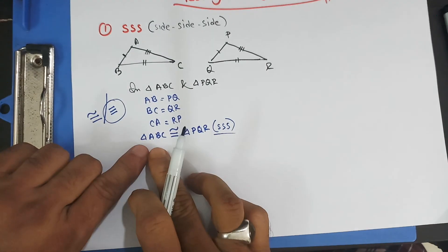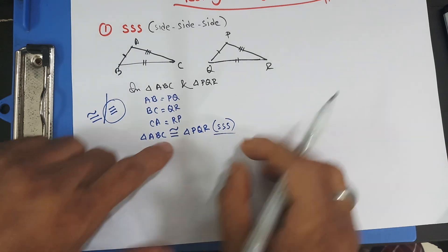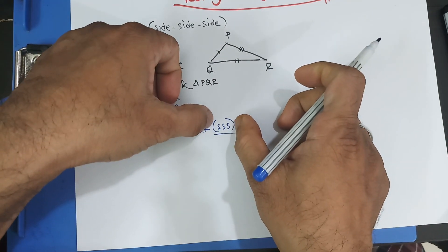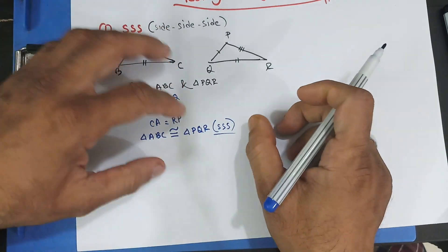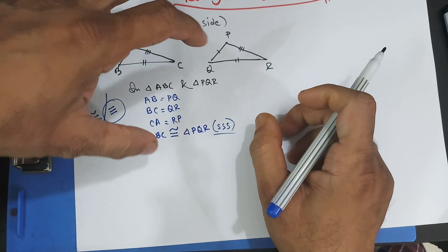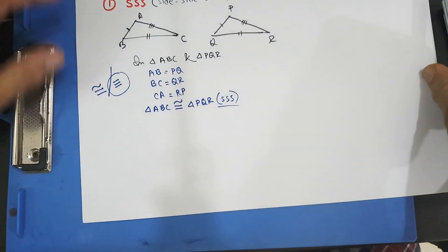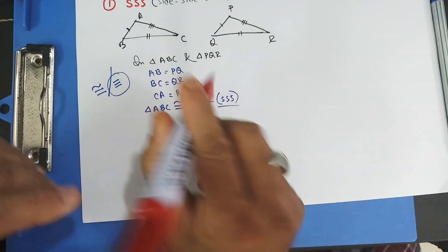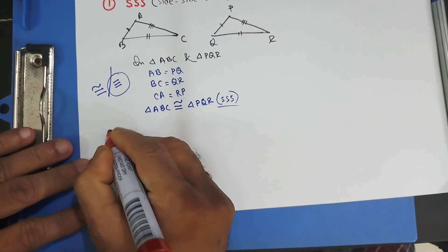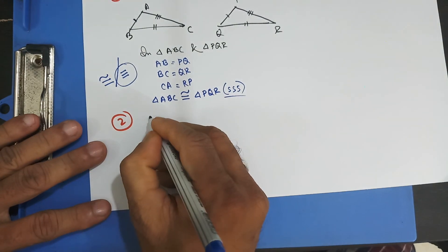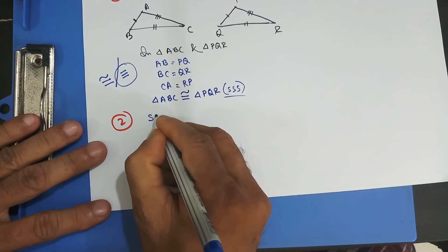After you write down that two triangles are congruent, you always have to state the test of congruency. In this case it's SSS. Now the next one is SAS.